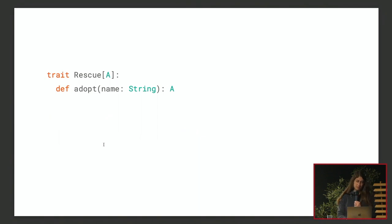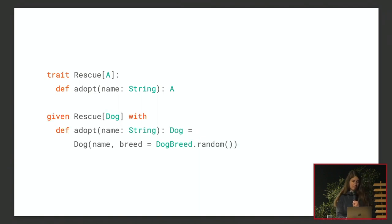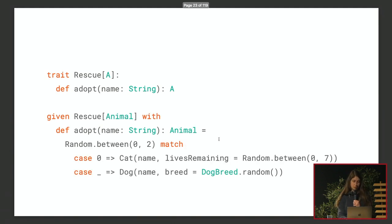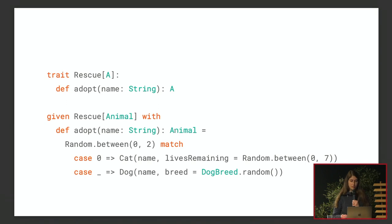We can define an instance of Rescue for Dog — the constructor just takes a name and a breed, where the breed is picked at random since it's a rescue. We can also provide an implementation for Animal: since you can't specify whether you want a cat or dog, it's random — half the time you get a cat, half the time a dog.